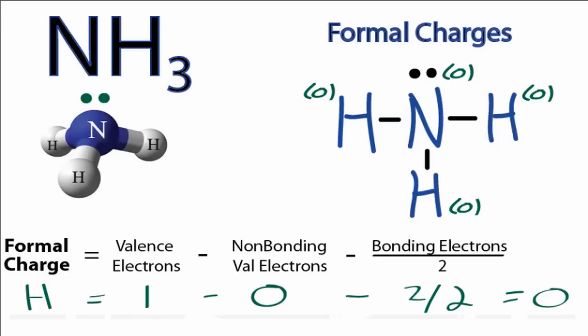So the formal charges for NH3 are all 0. And that makes sense. We want our formal charges to be as close to 0 as possible to give us the most likely or best Lewis structure. So those are the formal charges for NH3.